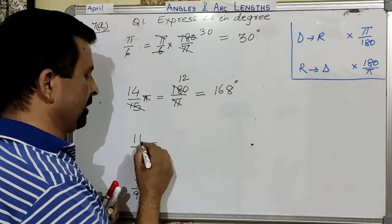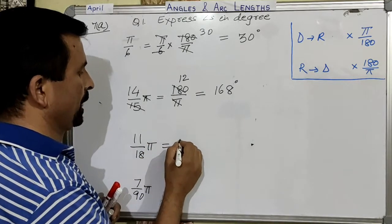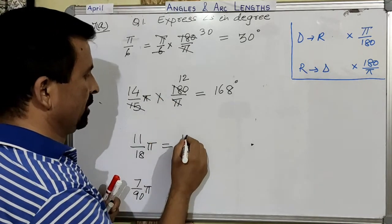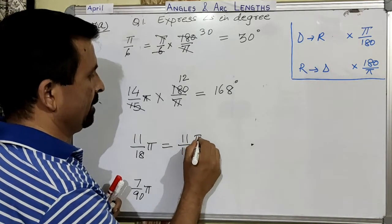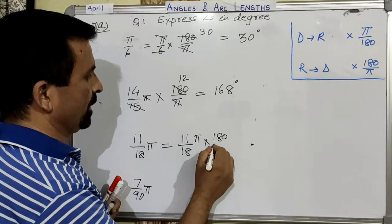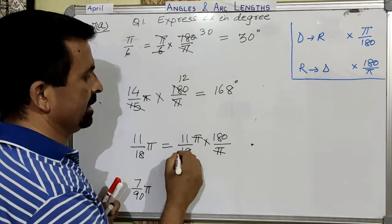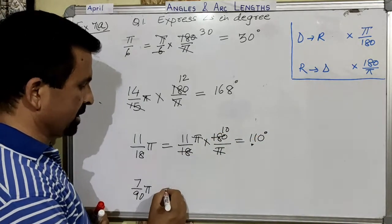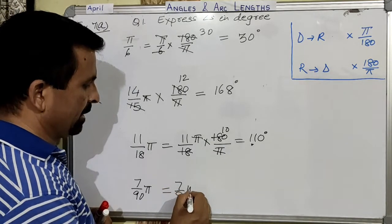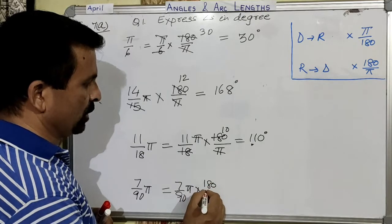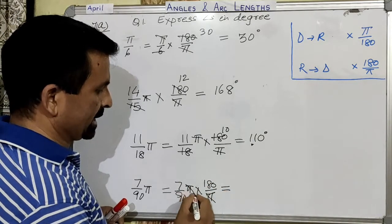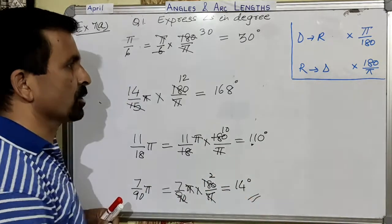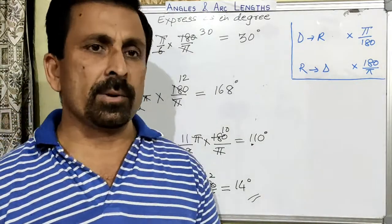Next, 11π/18 multiplied by 180/π: pi and pi cancel, 180 divided by 18 gives 10, and 11 × 10 = 110 degrees. Finally, 7π/90 multiplied by 180/π: pi and pi cancel, 90 divided by 2 gives 45, and 7 × 2 = 14 degrees. With this question, you have now understood how to convert radian into degree.